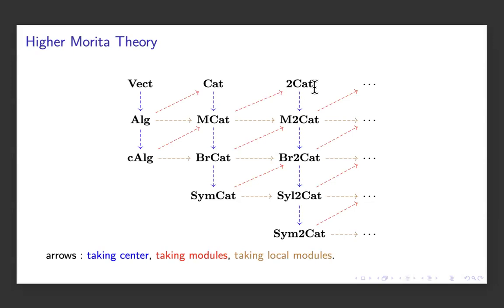This periodic table is interesting in many ways. There are dashed arrows to explain. Starting with an algebra, I can take modules of it. The collection of all modules forms a linear category. This is what the red arrow means. The other red arrows are just categorifications or higher-algebra analogs of this procedure of taking modules.